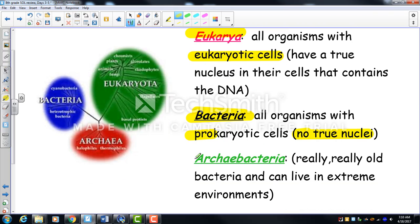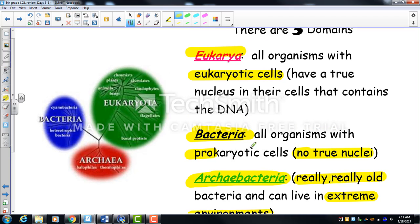The Archaeobacteria domain — 'archaea' meaning really old — likely contains the first living things on the planet. These bacteria can exist in extreme environments like thermal ocean vents and polar ice caps, surviving boiling or freezing conditions. This is why boiling things disinfects them — it kills regular bacteria, but not archaea. So our three domains are Eukarya, Bacteria, and Archaeobacteria.